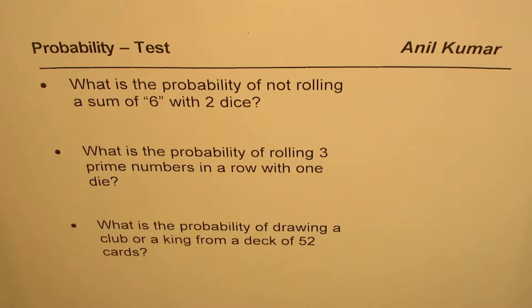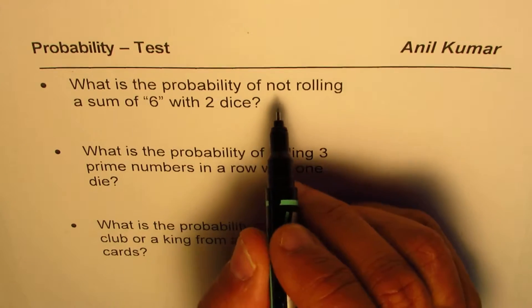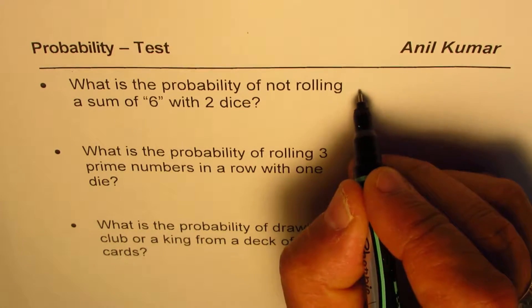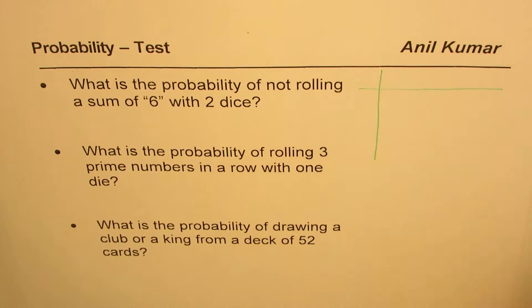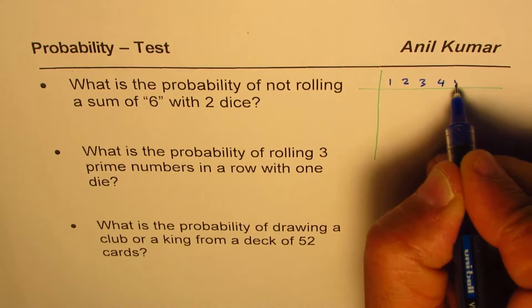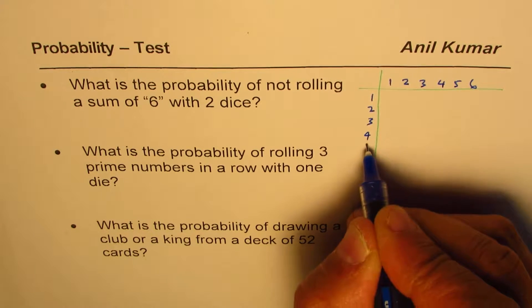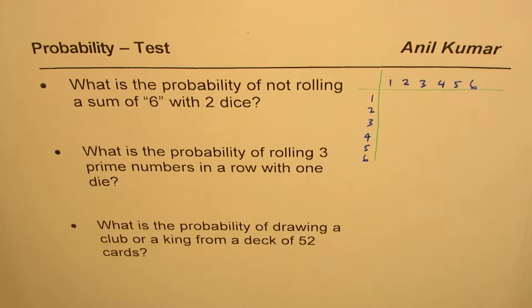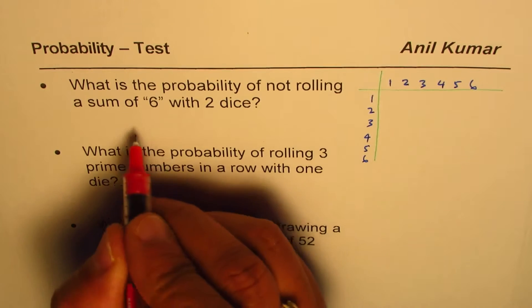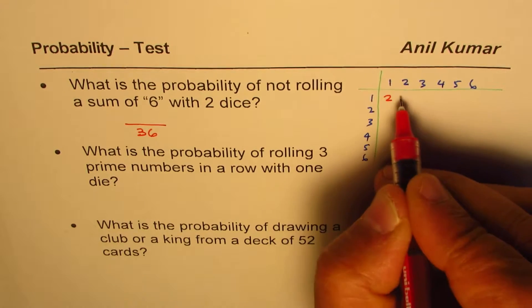Take up other questions from this probability test paper. So when we say two dice, not rolling a sum of six, it may be a good idea to make this matrix. In this matrix we write numbers from one to six in rows and columns, and then we just add them up. So one, two, three, four, five, six. And as you know, the total number of numbers will be six times six, 36.